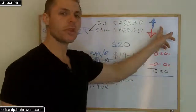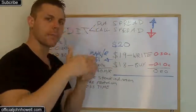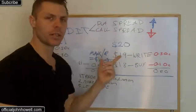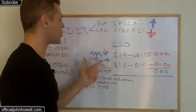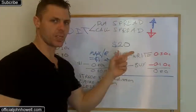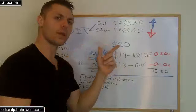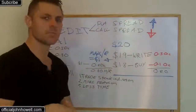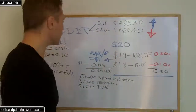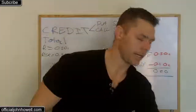With the put spread, it's more of a bullish strategy — meaning you want the market to be generally neutral or going up. You don't want it going down because that's when you generally lose money. With the call spread, it's more of a bearish strategy — you want the market to be neutral or going down, because going up is where you can lose money.